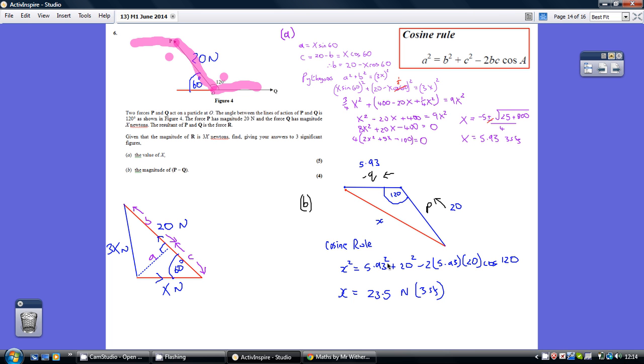Now for part B, I think this is more straightforward, we've got a P and a minus Q. I've put them together like this. We know this angle is 120 degrees from, really I've done it from the Z angle here, so this angle is 120.